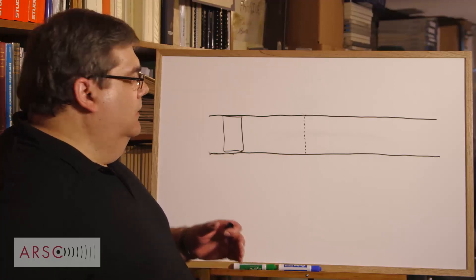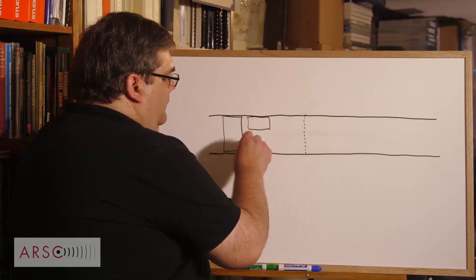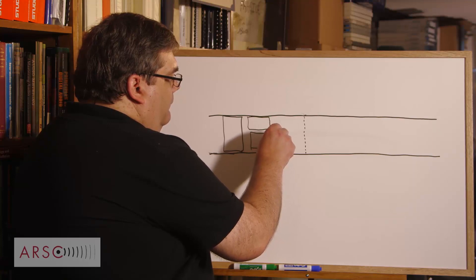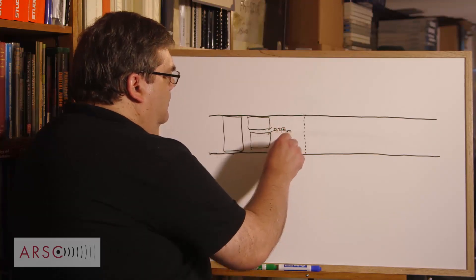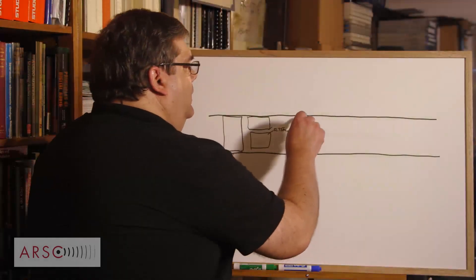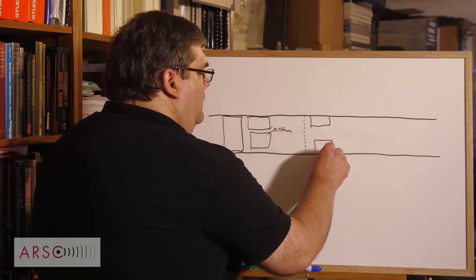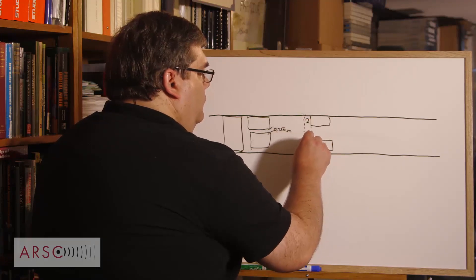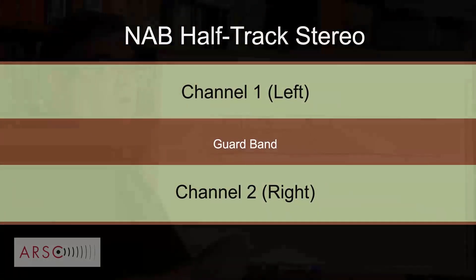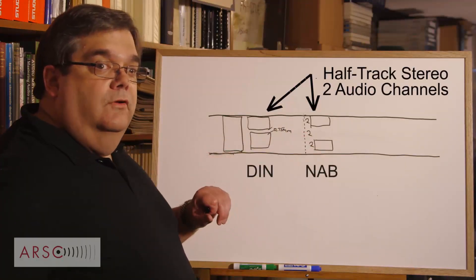Several track formats came out. First, the Germans used a very wide format with the guard band here 0.75 millimeters. While the Americans roughly made tracks that had a two millimeter guard band, two millimeter track. Much wider guard band, but narrower track, so the signal-to-noise ratio wasn't as good.